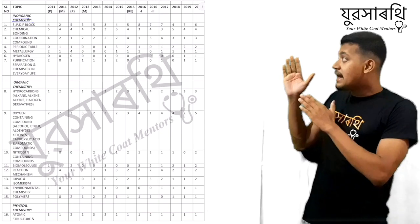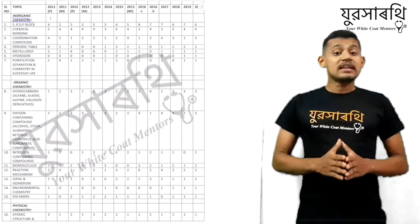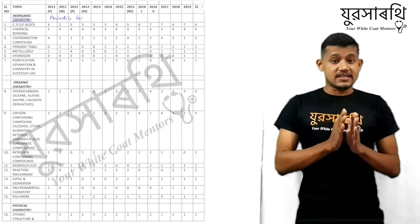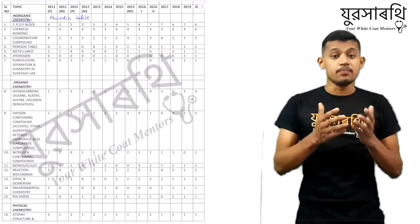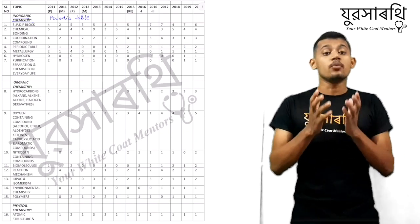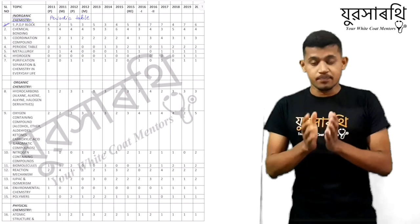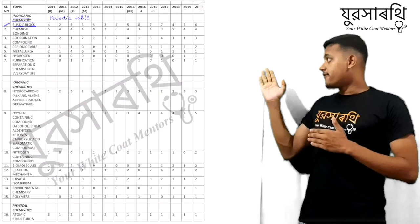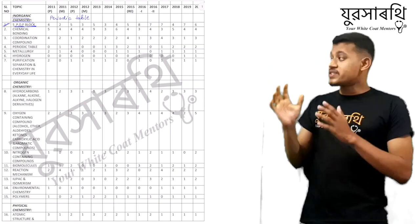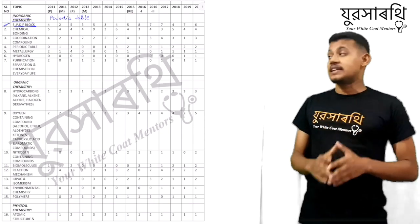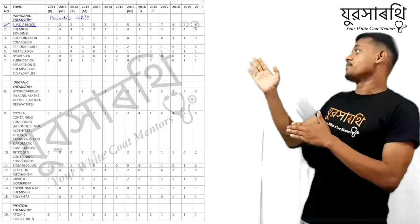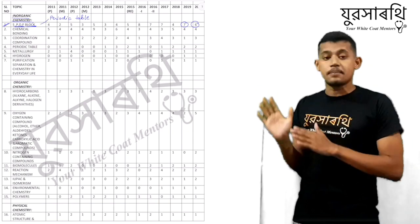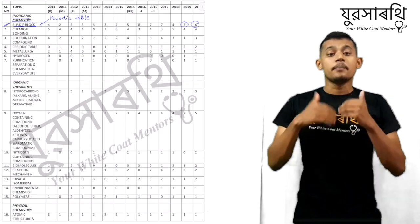First of all, starting with the inorganic portion. The basic thing we have to know in inorganic is the periodic table — it is said that the periodic table is the mother of inorganic chemistry. Without knowing the periodic table, we cannot learn inorganic chemistry. On the top of the list we have S, P, D, and F block. From these four chapters, which are solely based on the concept of the periodic table, almost five to six questions are asked every year.